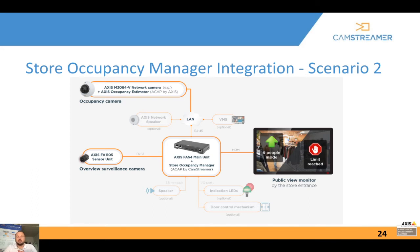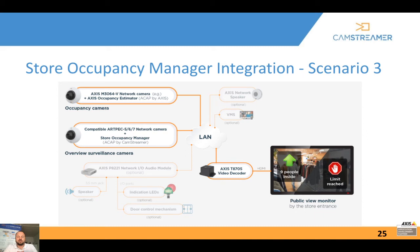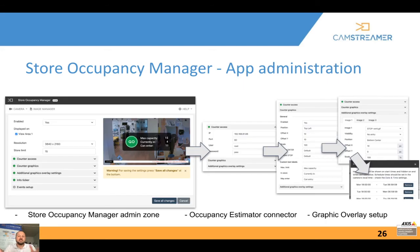Scenario three: if there are two separate cameras without HDMI, the stream is sent to a VMS or you can use the Axis T8705 video decoder — the Cam Streamer feed is sent via this converter to HDMI on a television. Administration is straightforward: enable the app, select the view area for the public view monitor, set the resolution and store limit. Next, define where the counting camera is (localhost is supported), choose what graphics to show above or below the threshold, and optionally schedule marketing promotions for after-hours or nighttime.